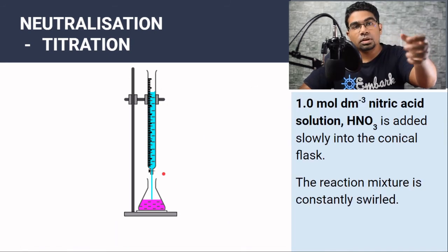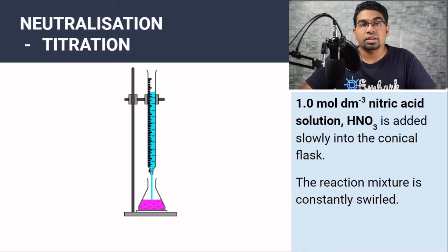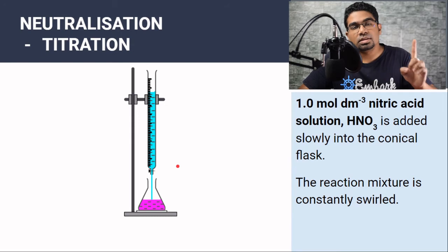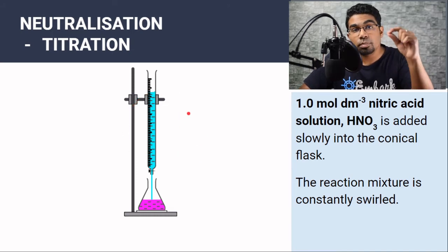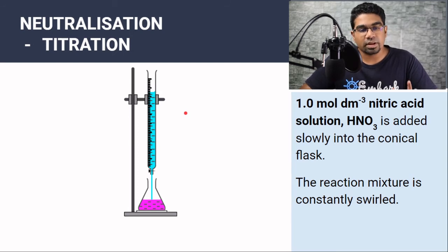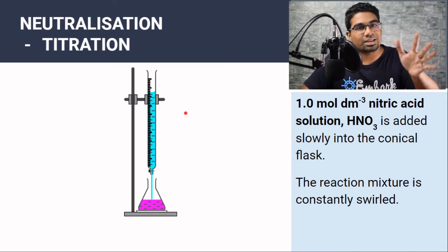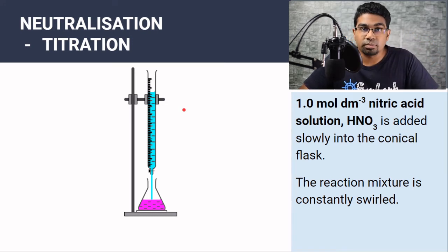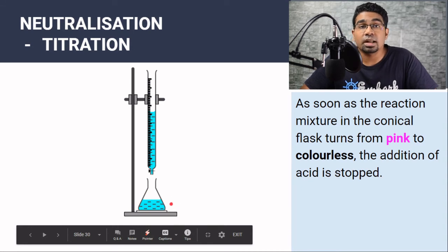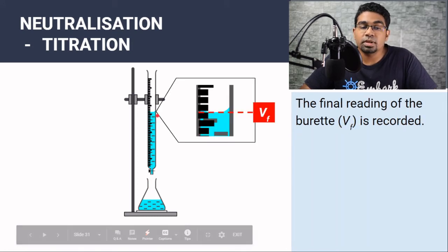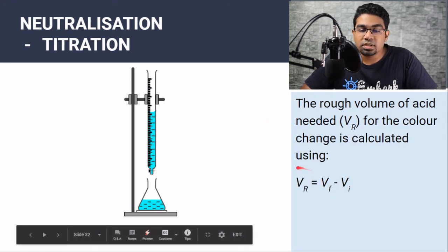We open the tap at the bottom of the burette and allow acid to flow into the conical flask while swirling to mix the acid and alkali properly. The first round is just to get a rough estimate — if we added drop by drop from the start, the titration would take too long. So we let the acid flow in quickly until the solution becomes colourless. The moment the mixture becomes colourless, we stop the acid and read the final volume. Final volume minus initial volume gives us the rough estimated volume needed to react with the sodium hydroxide.